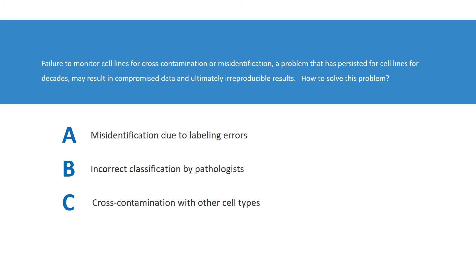Many reasons can result in failure to monitor cell lines, like labeling errors, incorrect classification by pathologists, or cross-contamination with other cell types. This problem may result in compromised data and ultimately irreproducible results.